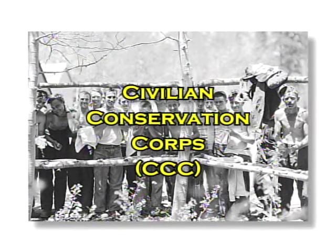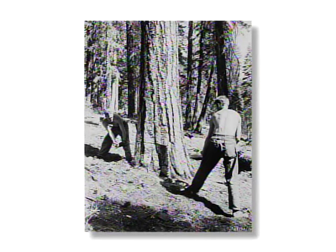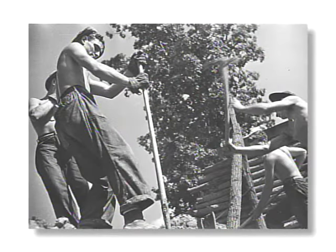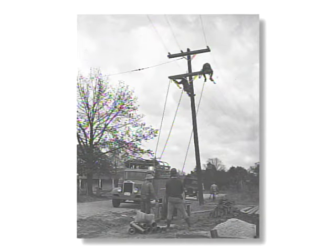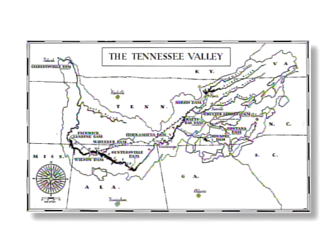The Civilian Conservation Corps (CCC) was a public works project operated under the control of the Army, designed to promote environmental conservation while getting young unemployed men off city street corners. The recruits planted trees, built wildlife shelters, stocked rivers and lakes with fish, and cleared beaches and campgrounds. The Tennessee Valley Authority (TVA) would build dams and power plants along the Tennessee River to bring electric power to rural areas in seven states.